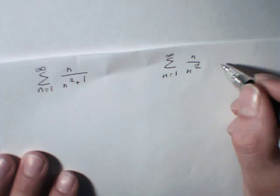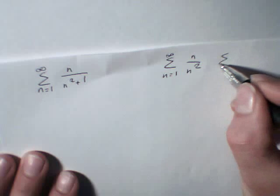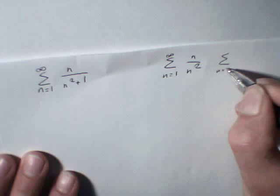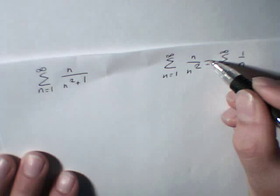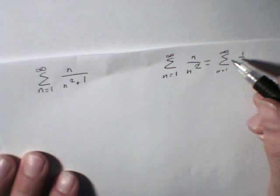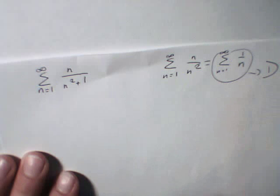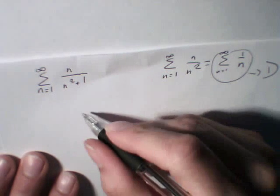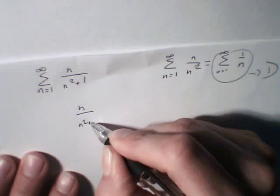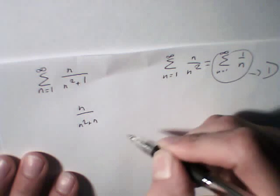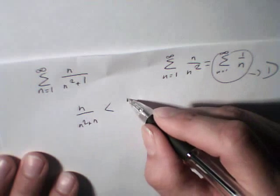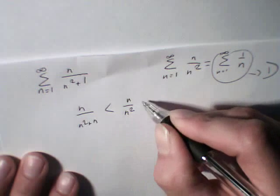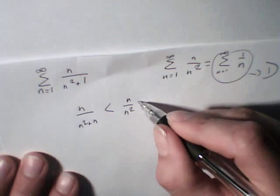This one is equal to sum from n equals 1 towards infinity of 1 divided by n. We know that this one is a divergent one. That's divergent. Now, if you think about it,